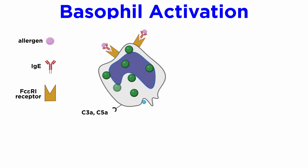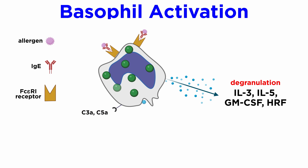Basophil activation is very similar to that of mast cells, involving FcεR1 receptor and IgE interaction. Like mast cells, C3a and C5a activate basophils through receptors on the surface of basophils. IL-3, IL-5, GM-CSF, histamine-releasing factor (HRF), and many chemokines prime basophils, leading to enhanced degranulation.